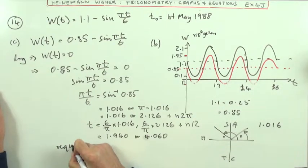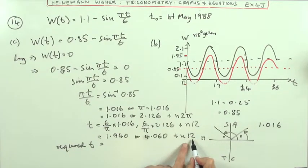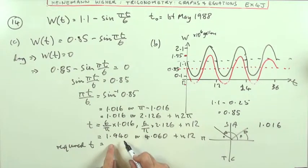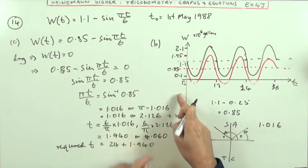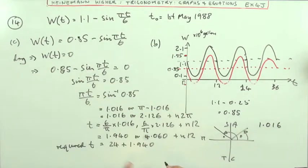So the required t is going to be adding on 12, adding on 24, it'll be that one. It must be 24 onto this will be 24 plus 1.940. That would be the number of months after the start, after the 1st of May. Well, that's two years. So that takes me up to 1990. So I've got 1990.